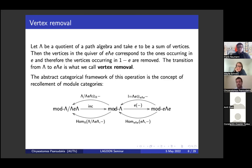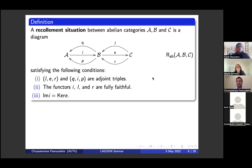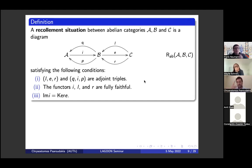In this recollement we have mod lambda, the module category of lambda over E, and on the left-hand side the quotient algebra lambda modulo the ideal generated by E. On the right-hand side there are three functors including lambda·E, and three functors on the left-hand side. For the abstract definition: given three abelian categories A, B, C, this is called a recollement if L, E is an adjoint pair; E, R is an adjoint pair; Q, I is an adjoint pair; I, P is an adjoint pair; I and R are fully faithful; and the image of I is exactly the kernel of E. This is the same definition also for derived categories.